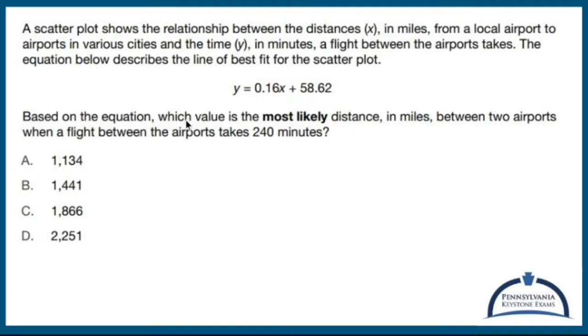Based on the equation, which value is the most likely distance in miles between two airports when a flight between the airports takes 240 minutes?